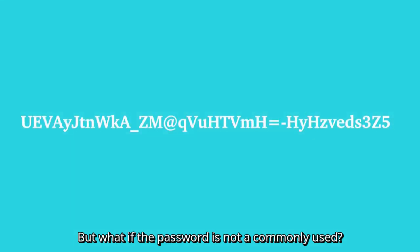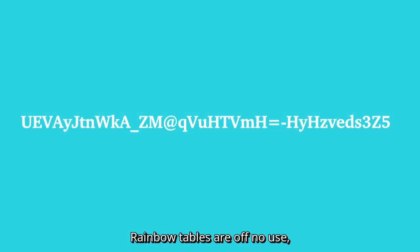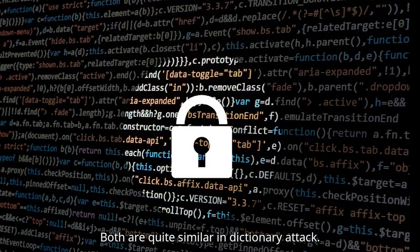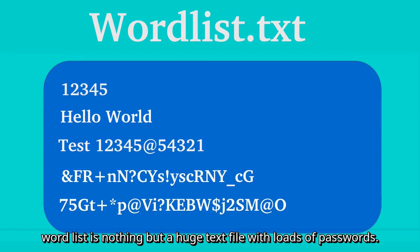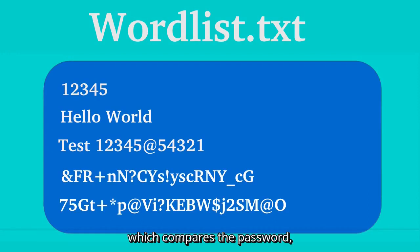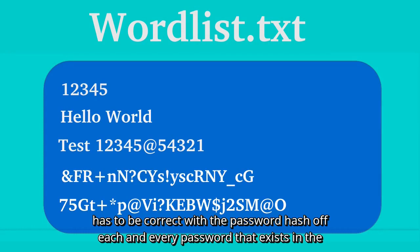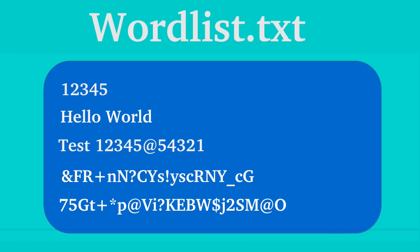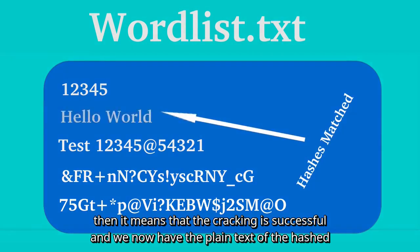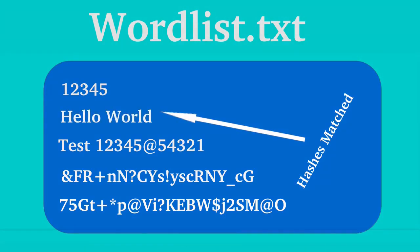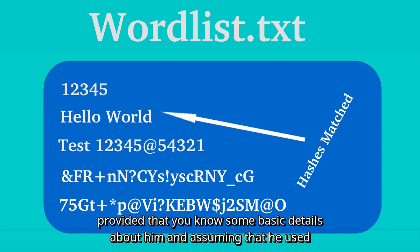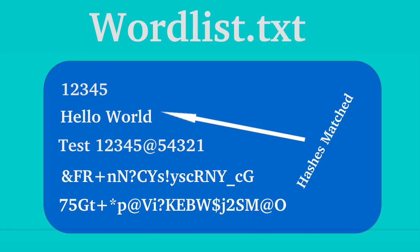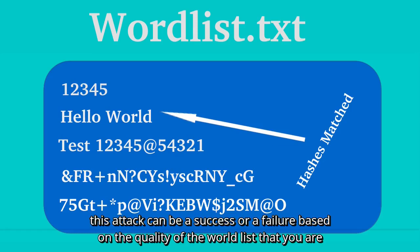But what if the password is not a commonly used one? In that case, rainbow tables are of no use. So there come dictionary attacks and brute force attacks, both of which are quite similar. In a dictionary attack, you have a word list — a huge text file with loads of passwords. The hacker writes code which compares the target password hash with the hash of each and every password in the word list. If any hash matches, the cracking is successful and we have the plain text. This attack can be target-specific, meaning you can create your own word list targeting a specific individual, provided you know some basic details about them. The success depends on the quality of the word list being used.